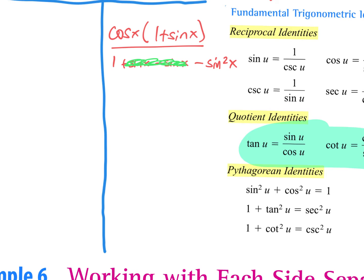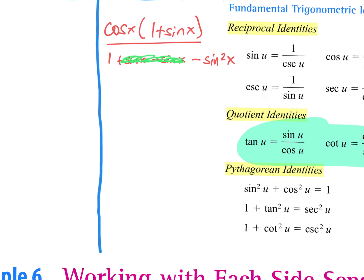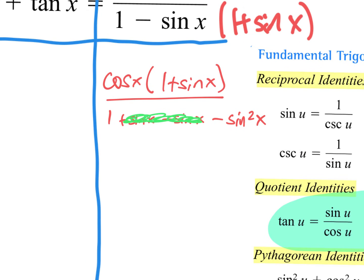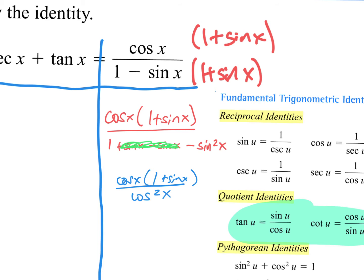Do we have a Pythagorean identity that has a sine squared and a one? Yes — the first one. So what could I do to that first Pythagorean identity where it says something equals one minus sine squared? Subtract the sine from both sides and I would get cosine squared. So I'm going to rewrite the top. My numerator is cosine x times one plus sine of x, over cosine squared x. Instead of having a denominator with two terms, I now just have a monomial — just one term.